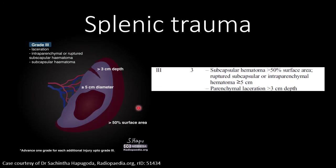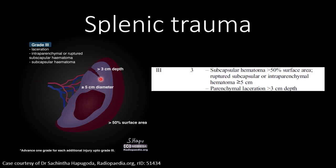Grade 3 injuries, similar to the liver grading scale, include a hematoma greater than 50% of the surface area of the spleen, or greater than 5 cm in diameter but showing no evidence of active extravasation or pseudoaneurysm, or a laceration greater than 3 cm in depth.